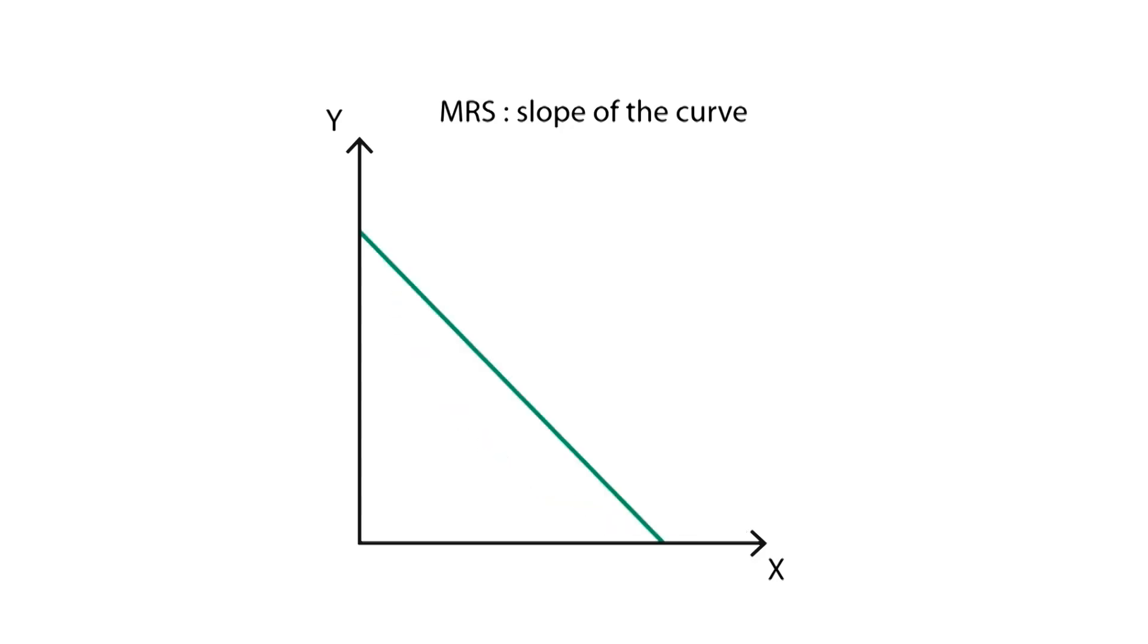In the second graph, however, the indifference curve is now a 45 degree negative slope, which implies that both goods are perfect substitutes. For perfect substitutes, the marginal rate of substitution will remain constant. It is worth mentioning that the marginal rate of substitution will be constant for all perfect substitutes, but it is only equal to one in a case such as the one shown, where the slope is of 45 degrees.